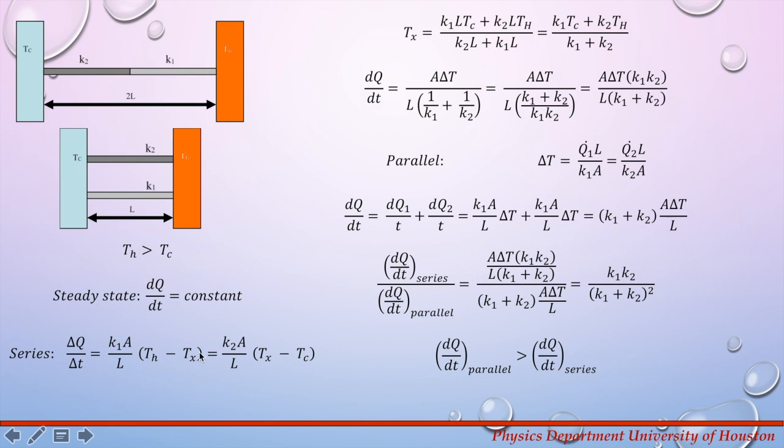So the equation will look like this. The first part here is for the bar K1 and second part here is for the bar K2. From here we can go ahead and calculate the value for Tx. It depends on the temperature Tc and Th and also on the K1 and K2 values. From here we can write down delta Q over delta T by plugging in the value of Tx into this equation and we are going to end up with this term here.